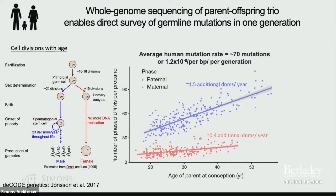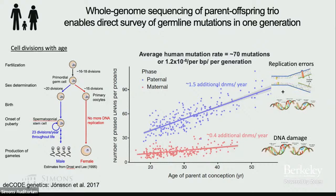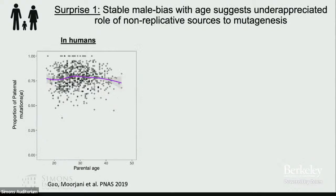The father's age effect is consistent with continuous divisions in the male germline. But the mother's age effect is quite puzzling — you would expect a flat line since oocytes are not dividing. However, mutations can occur due to DNA damage from endogenous or exogenous sources. In the female germline, the rate increase is likely due to DNA damage. On average, males contribute three-fourths of all mutations and females one-fourth, largely because of the increased mutations post-puberty in males.